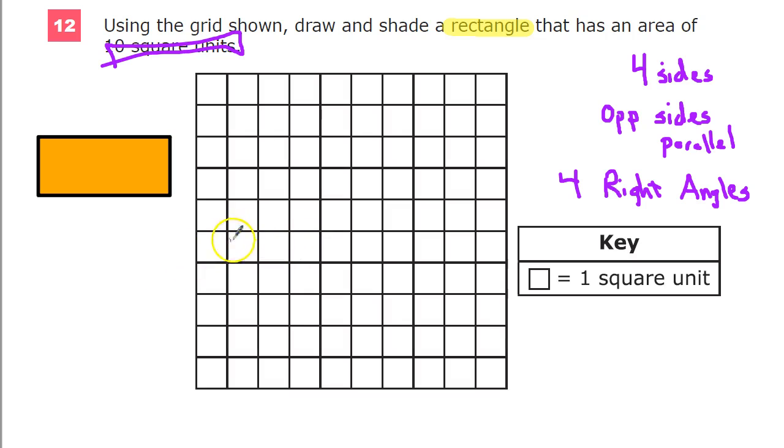As long as you have 10 shaded, this is 1, 2, 3, 4, 5, 6, 7, 8, 9, 10. So you could have 10 of them in a row, all the way down, and then shade all that in. That's one option.